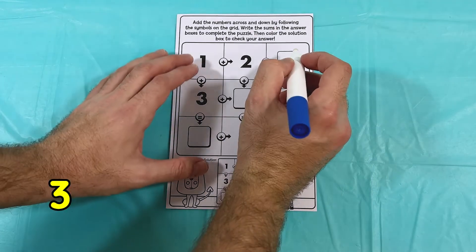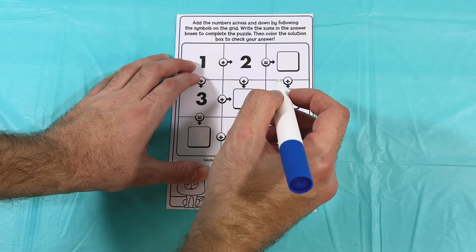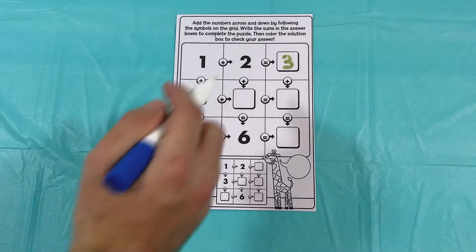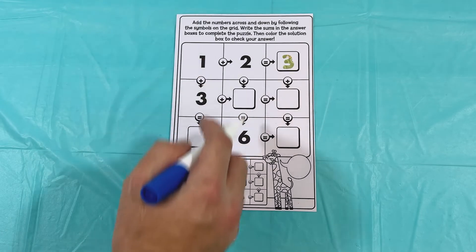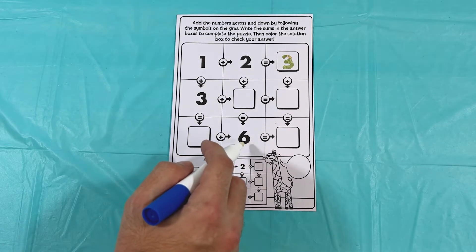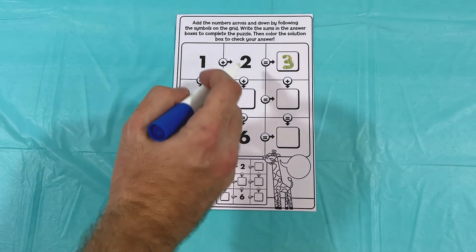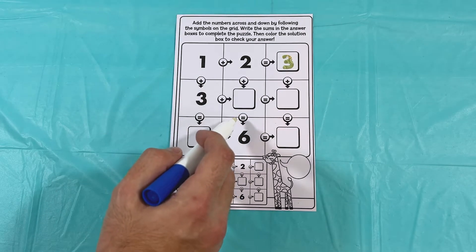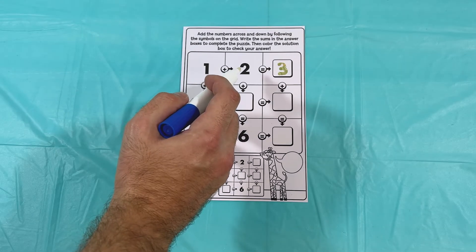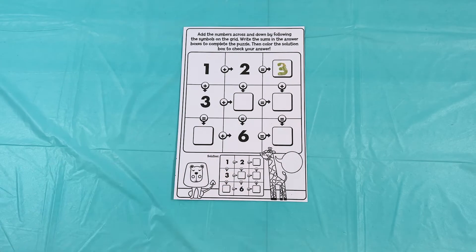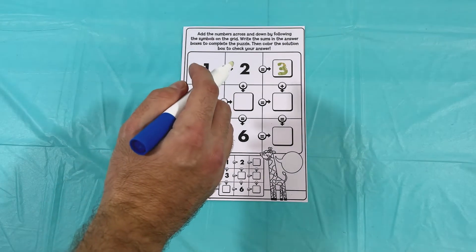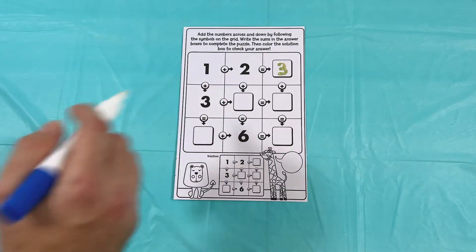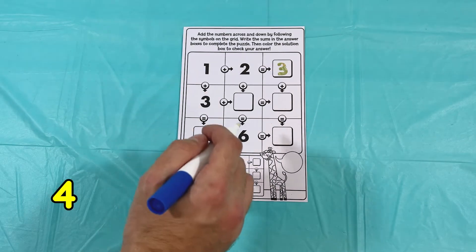Okay, so we're going to follow along here. So it says one plus two, that equals, that's right, three. So let's go ahead and write three down in our box. Next we have the two here and it's pointing down towards the six. So two plus blank equals six. Two plus... one, two, three, four, three, four, five, six. So two plus four equals six.